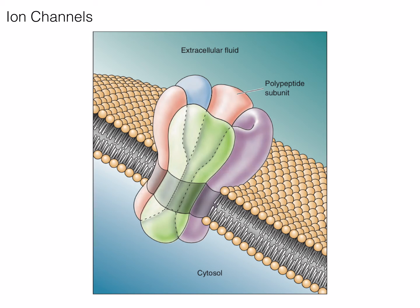Leak channels are ion channels that remain open. One such channel, the potassium leak channel, continuously releases potassium ions from the neuron, maintaining the negative membrane potential of the neuron, approximately minus 62 mV with respect to the outside.